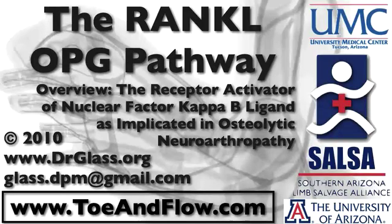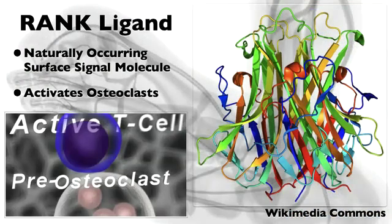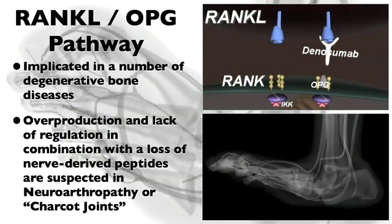The receptor activator for nuclear factor kappa B ligand is believed to be an important molecule of bone metabolism. This is a natural and necessary surface-bound molecule on several types of cells and serves to activate osteoclasts. Overproduction of RANKL is implicated in a variety of degenerative diseases.